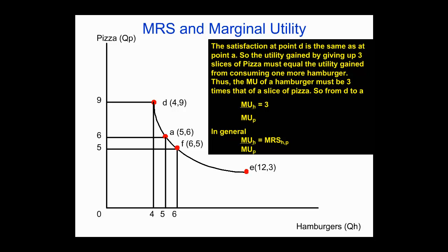That gives us some properties of the indifference curve and how we make choices. We've seen something with regard to an initial endowment of goods — we started at point A: five hamburgers and six slices of pizza. We showed that there were areas poorer in terms of satisfaction, below and to the left of point A, and points offering greater satisfaction in the preferred zone. There were zones of indifference that we've been examining. Points D, A, F, and E yield the same level of satisfaction — this consumer is willing to substitute between pizzas and hamburgers and still get the same level of satisfaction.